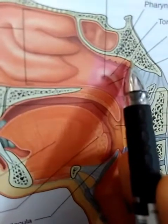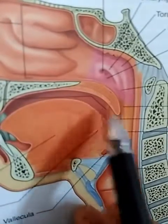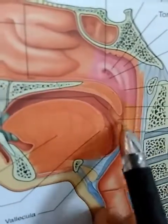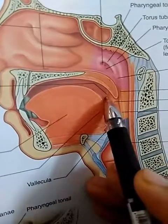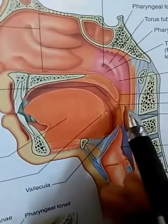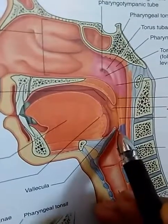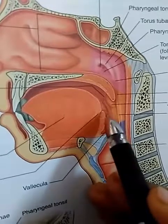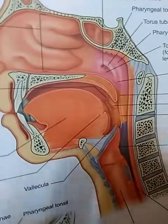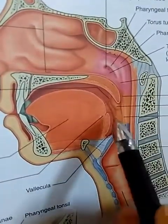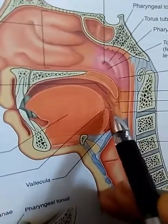The oropharynx lies just behind the oral cavity. The space between the two is called the oropharyngeal isthmus. It extends from the level of the soft palate to the hyoid bone, which lies at the level of C3. Major structures present include the palatine tonsils, and the soft palate lies at the roof. The posterior wall is related to the retropharyngeal space and C2-C3 vertebrae.